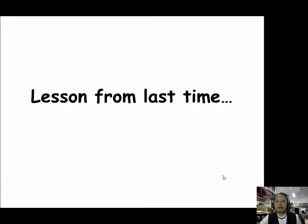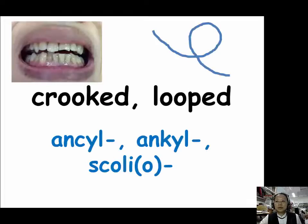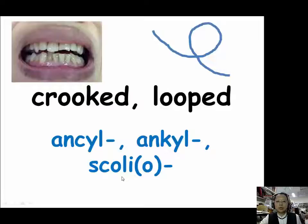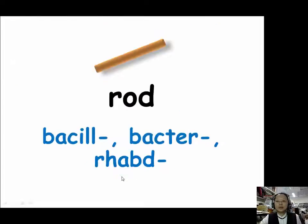Hello everyone. In this part we will start learning prefixes and suffixes regarding shapes. But first, let's review what we learned last time. For describing things that are crooked or looped, we use the prefixes ANCYL, ANKYL, and SCOLIO. For describing things that are rod-shaped, we use the prefixes BACILL, BACTER, and RHABD.